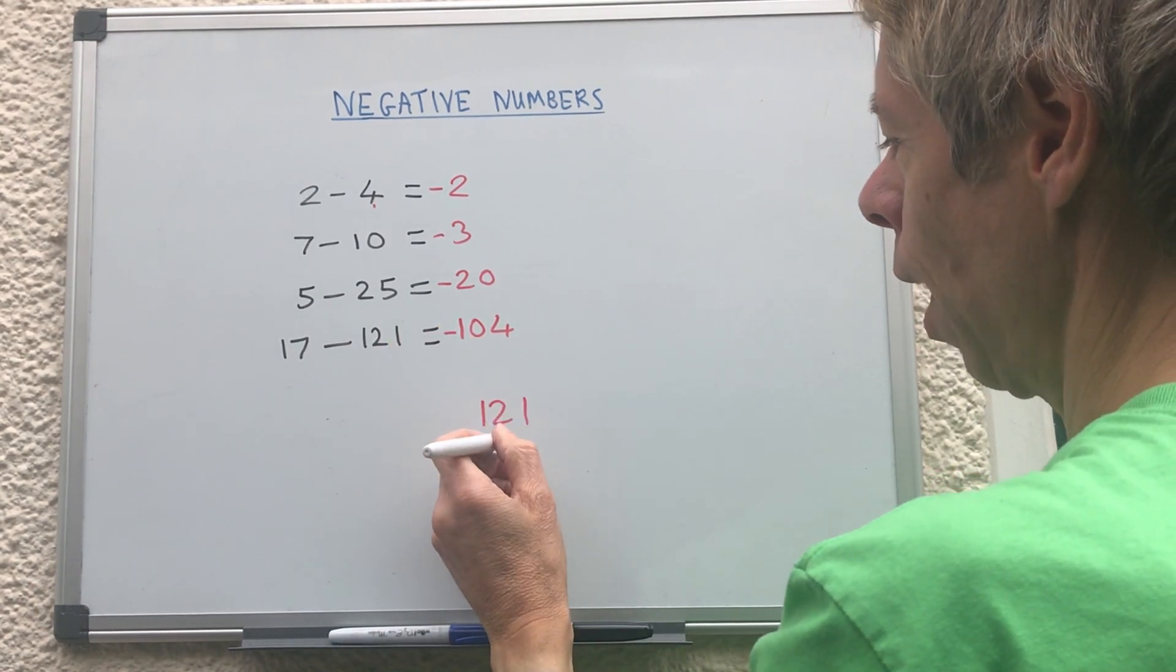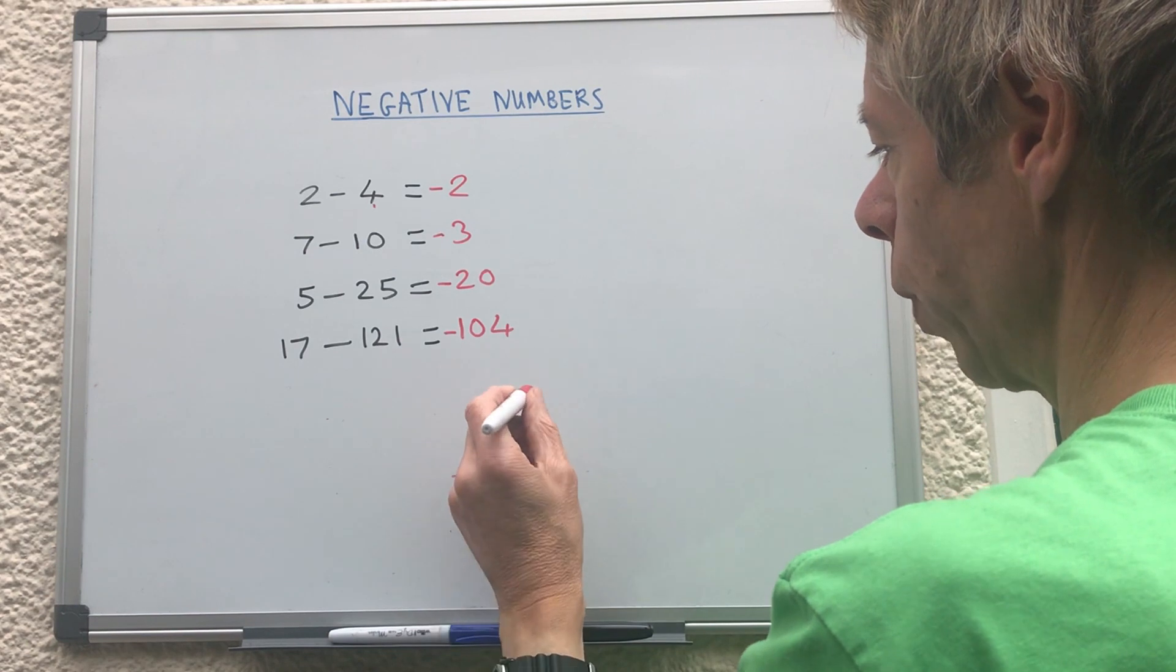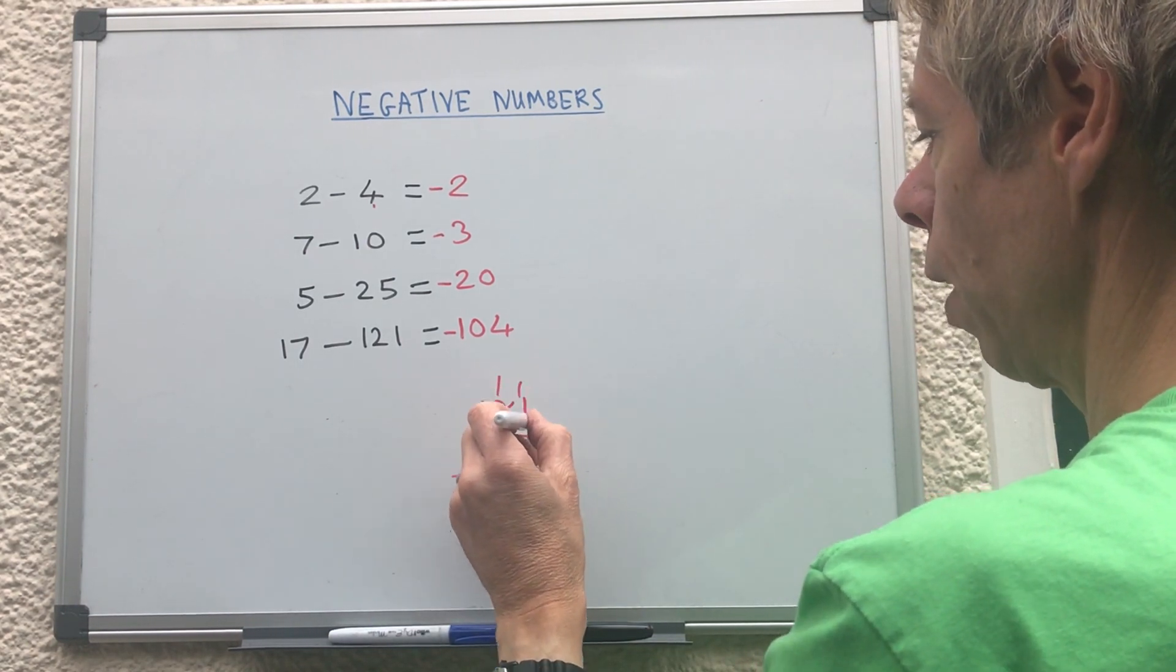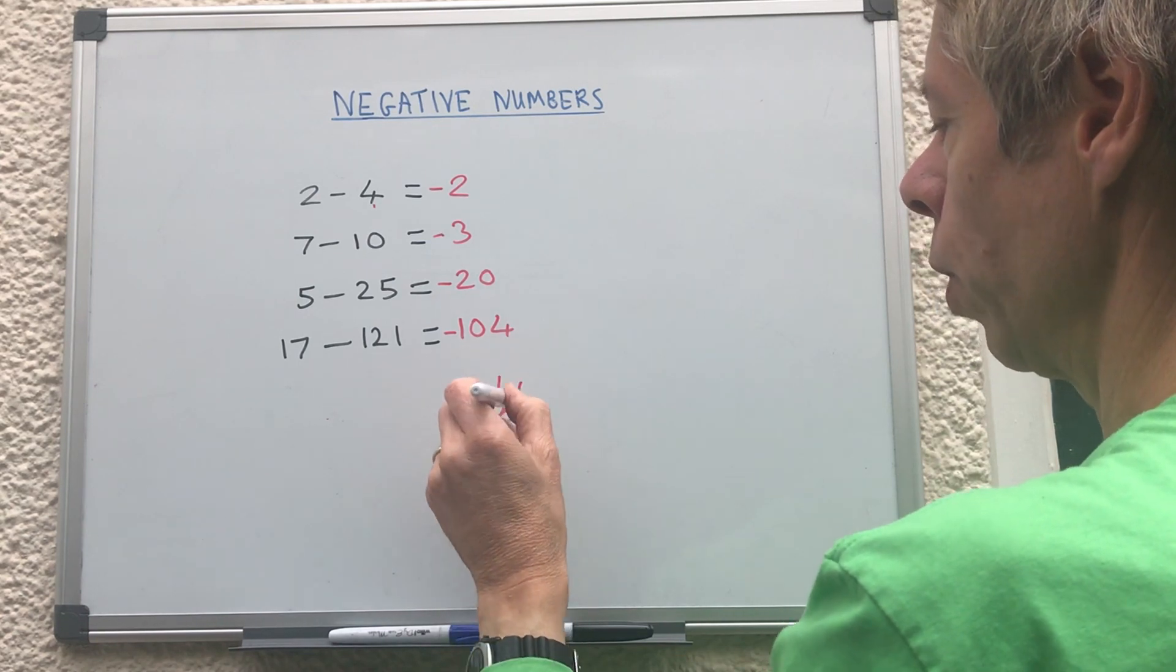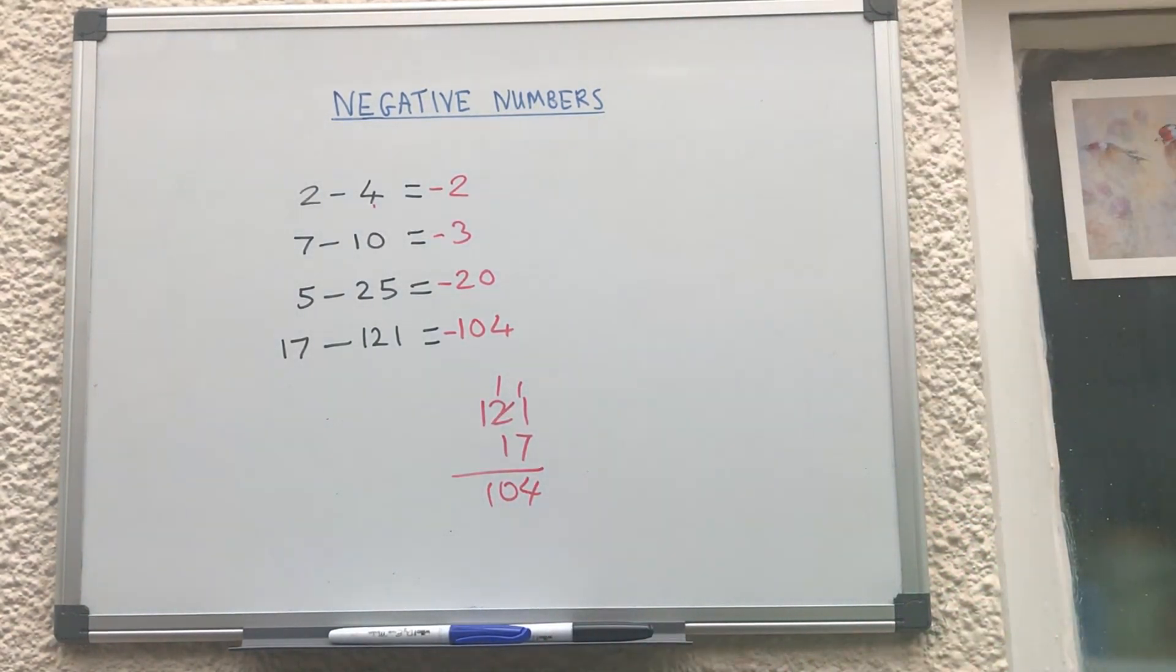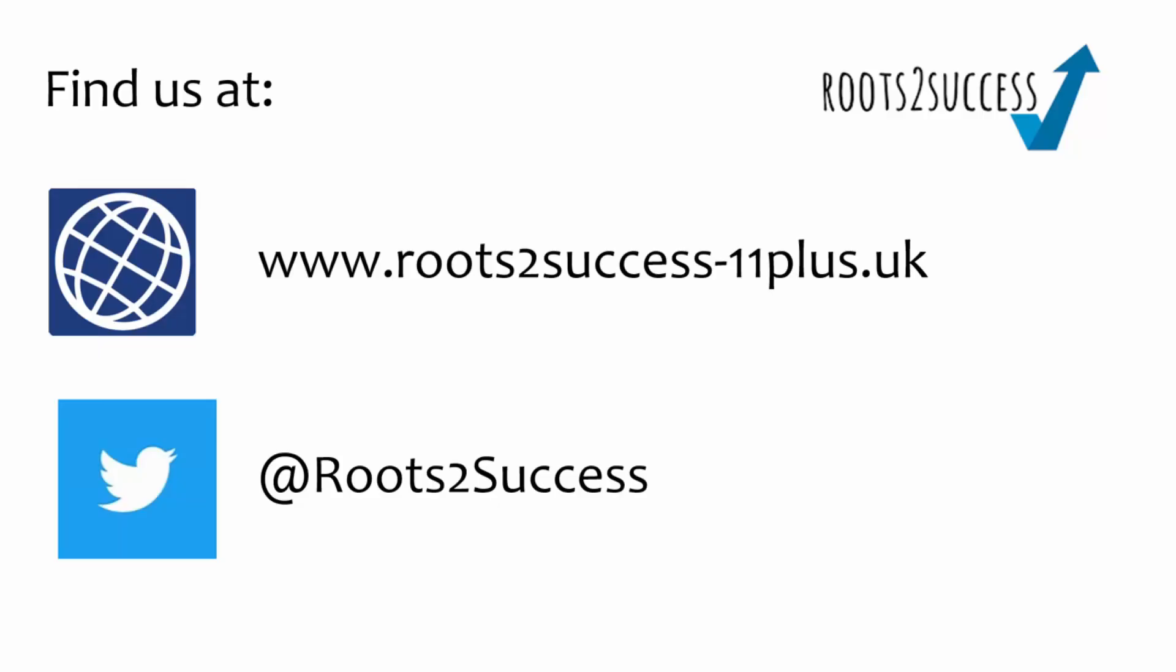121 take away 17 is 104, put a minus sign in front. If we're not sure that's right because there have been mistakes that have crept into these videos, we can do a column subtraction. So we're going to do a one there, it's 11 take away seven is four, one take away one is zero. Yes we were right, that's lucky.